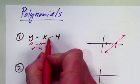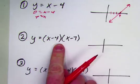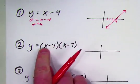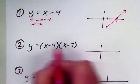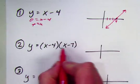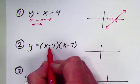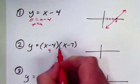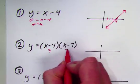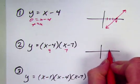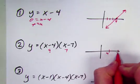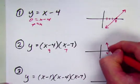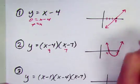We know that y = x - 4 is a line. We should know that (x-4)(x-7) is a parabola. The beautiful thing is that if I multiply this out, I would have an x squared in it. Using the zero product property, x equals 4 and x equals 7 are its two x-intercepts. So I end up with a parabola that goes down and then back up.